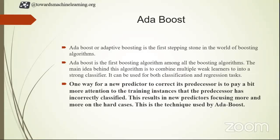AdaBoost works on a principle that one way for a new predictor to correct its predecessor is to pay a bit more attention to the training instances that the predecessor has incorrectly classified. The whole boosting is based on the idea that the weakness of the first model is passed to the second model, and then the weakness of the second is passed to the third, and so on. Following this approach, AdaBoost assigns more weights to the incorrectly classified samples and gives less weights to the correctly classified samples. This results in a new predictor focusing more and more on the hard cases.